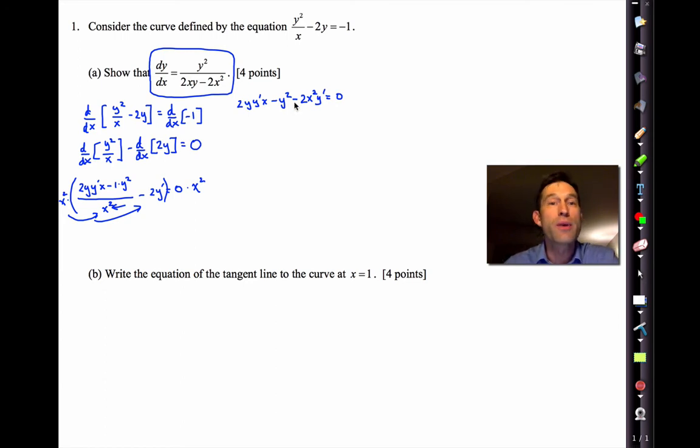We then get an equation that doesn't have any fractions in it anymore. 2xy'x - y² - 2x²y' = 0. Now as always with implicit derivatives, we take things like this which don't have a y prime attached to them and move them on the other side, and then we leave the things with the y prime on the left-hand side and factor that y prime out. I'm going to factor a y prime out and get negative 2x², then move the negative y² over to the other side and it'll become a positive y².